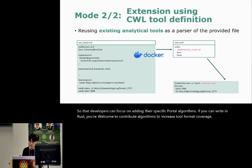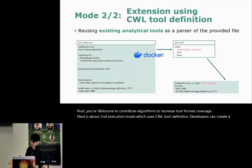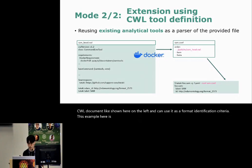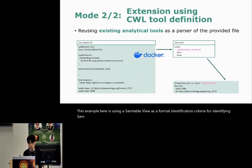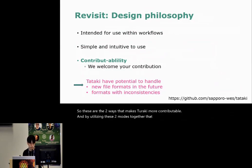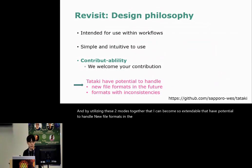Next is the second execution mode, which uses CWL tool definition. Developers can create a CWL document, like shown on the left, and use it as a format identification criteria. This example uses SAMtools view as a format identification criteria for identifying a SAM file. What's so useful about this is that you can reuse existing analytical tools as a parser. These are the two ways that make Tazaki more contributable, and by utilizing these two modes together, Tazaki can become so extendable that it has the potential to handle new file formats in the future, and file formats with inconsistencies.